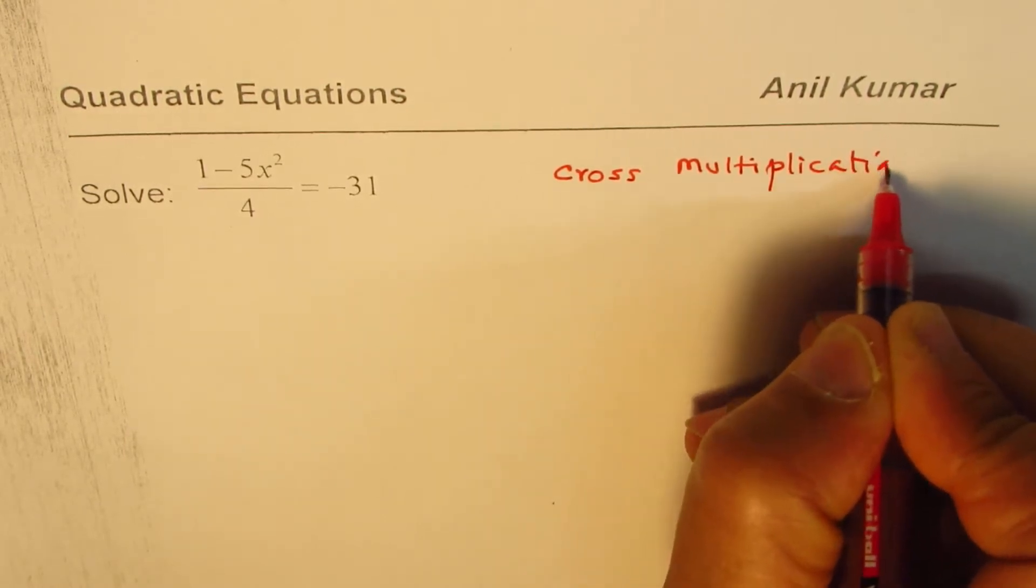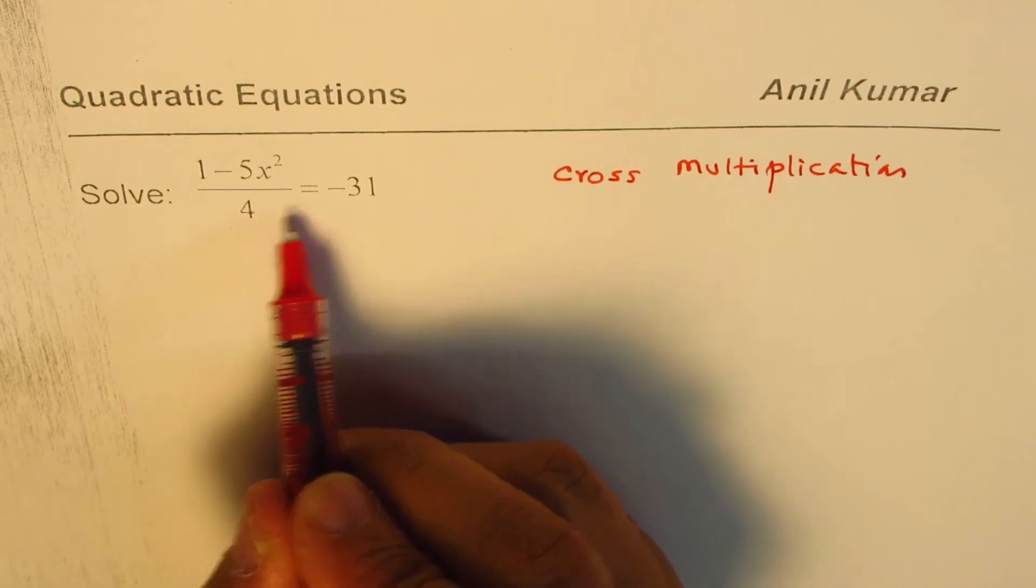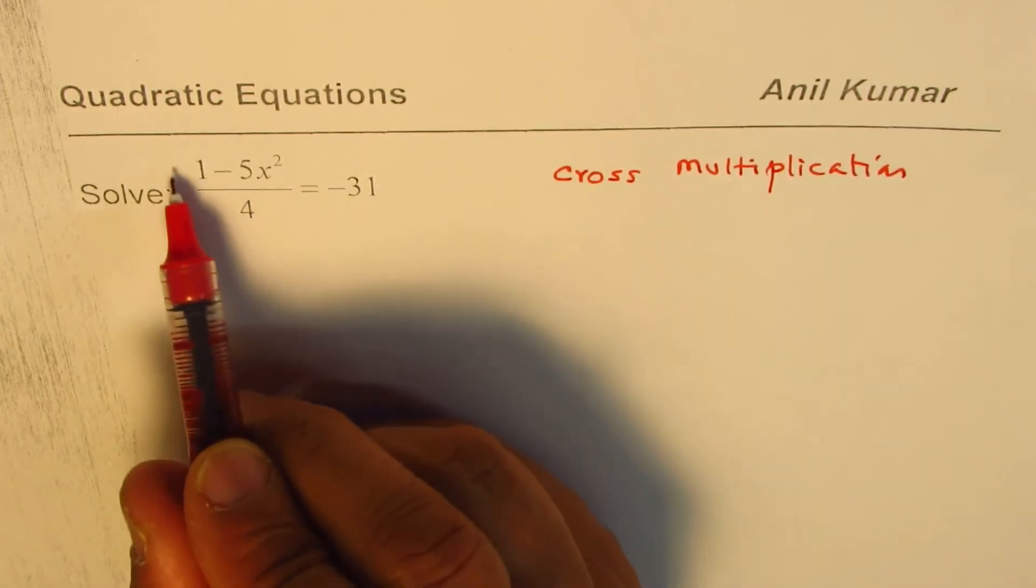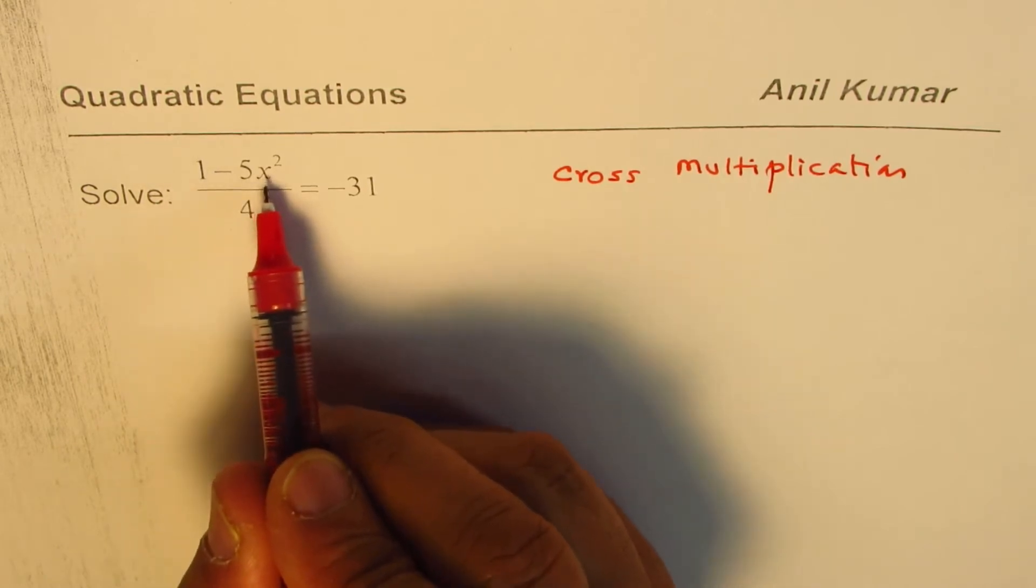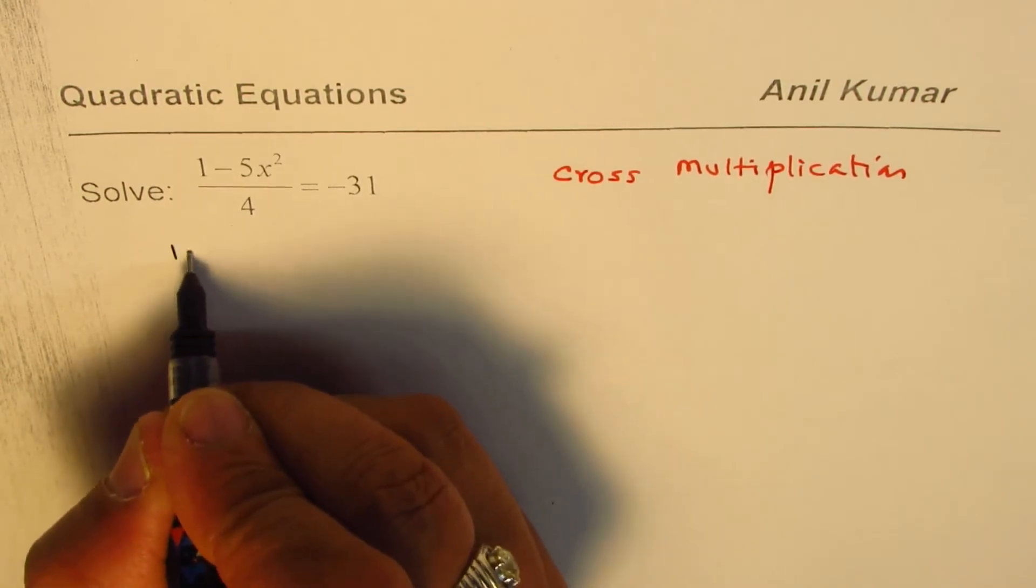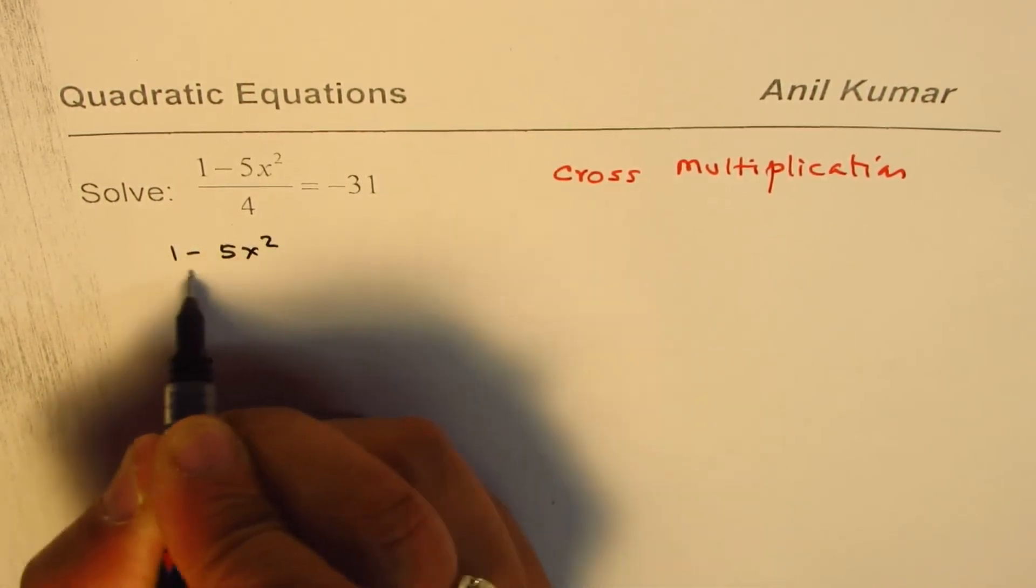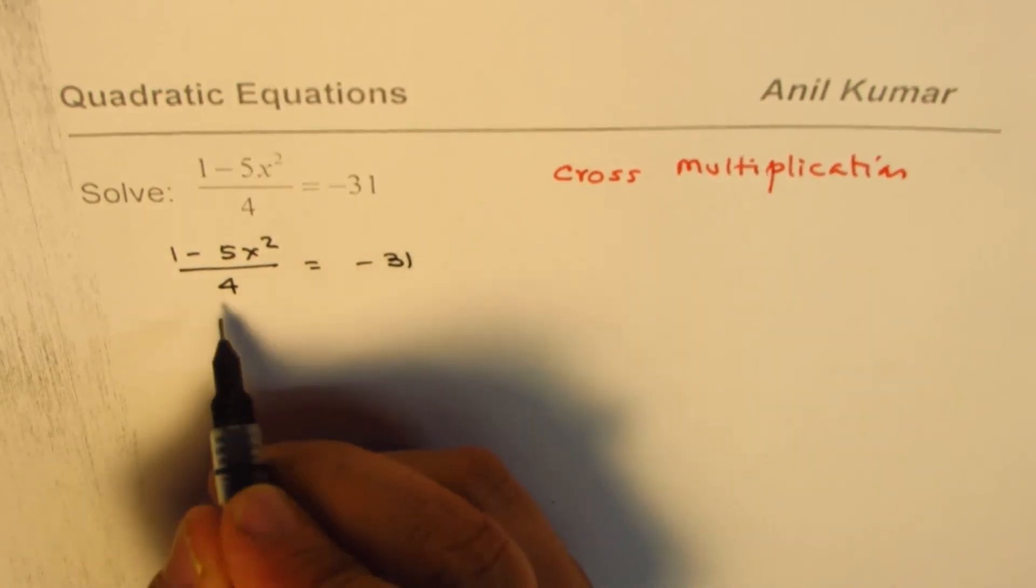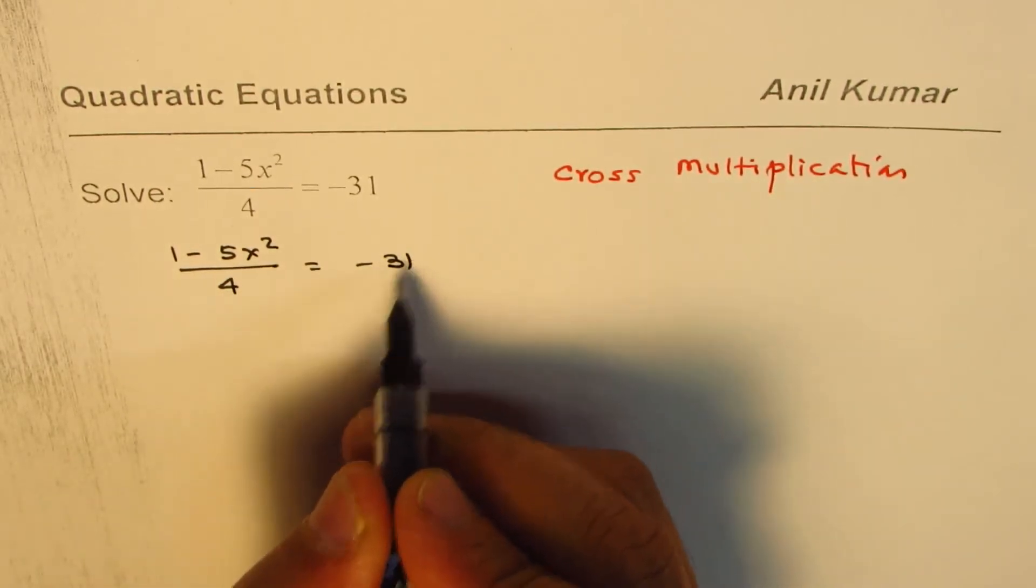So what does that mean? It means you multiply the number on the right by the denominator 4 here, and you are left with 1 minus 5x squared on the left side. So once you do this cross multiplication, let me rewrite here: 1 minus 5x squared over 4 equals minus 31. So you end up multiplying minus 31 by 4.